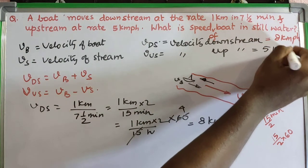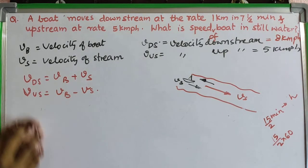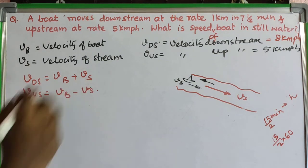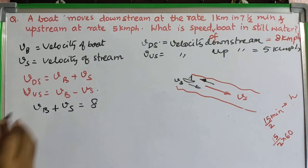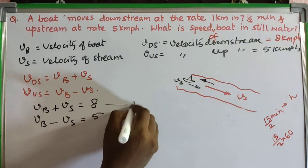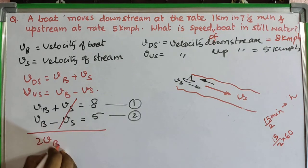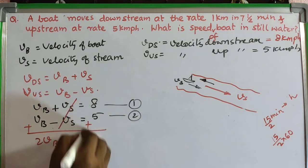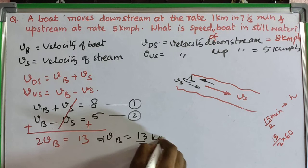Now let's find the speed of the boat in still water by setting up equations. For downstream: VB plus Vs equals VDS equals 8. For upstream: VB minus Vs equals 5. Adding both equations, Vs cancels out, giving 2VB equals 8 plus 5 equals 13, so VB equals 13 divided by 2.